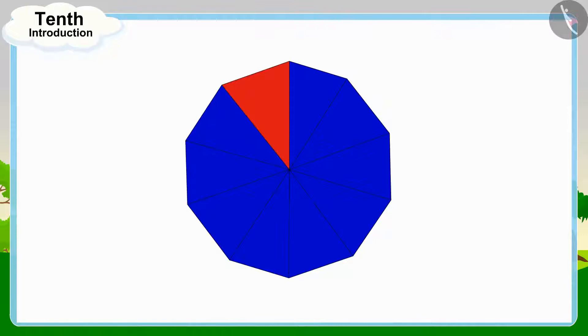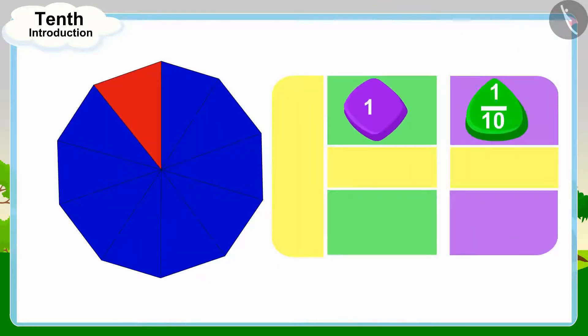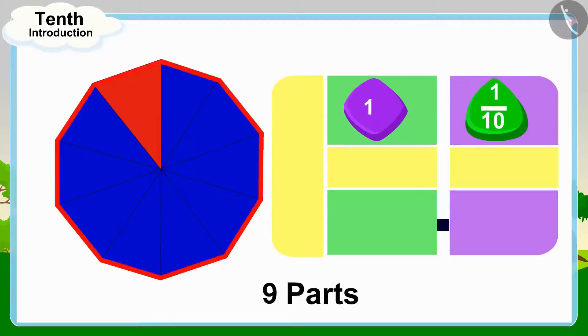Golu has colored nine out of the ten parts of the flower. Because our whole is divided into ten equal parts, we will first write the decimal point in this way. Now, Golu has colored nine parts of this whole.